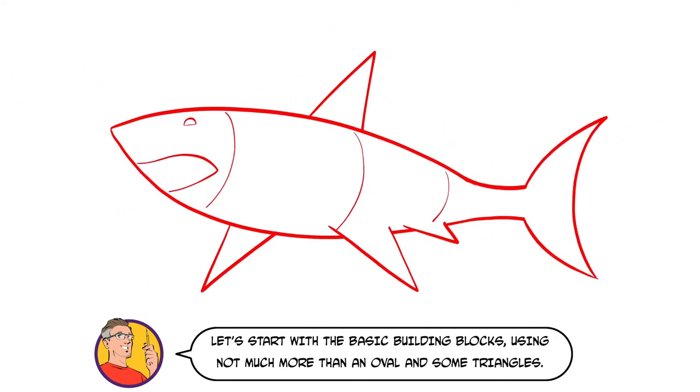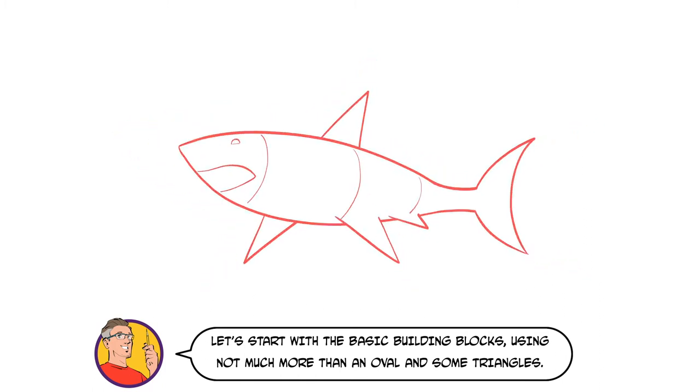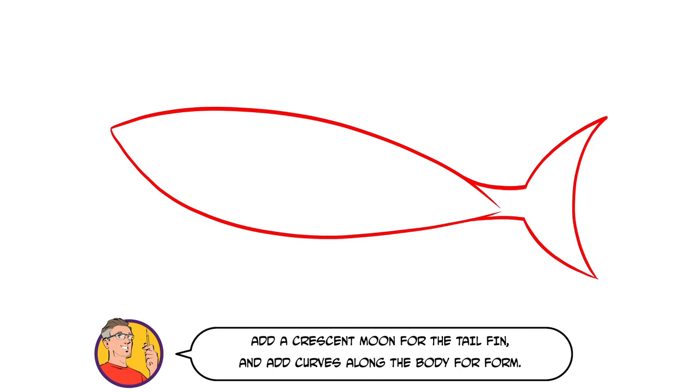Let's start with the basic building blocks, using not much more than an oval and some triangles. Start with an oval eye shape for the main part of the body. Angle it up at the left edge slightly. Add a crescent moon for the tail fin and add curves along the body for form.